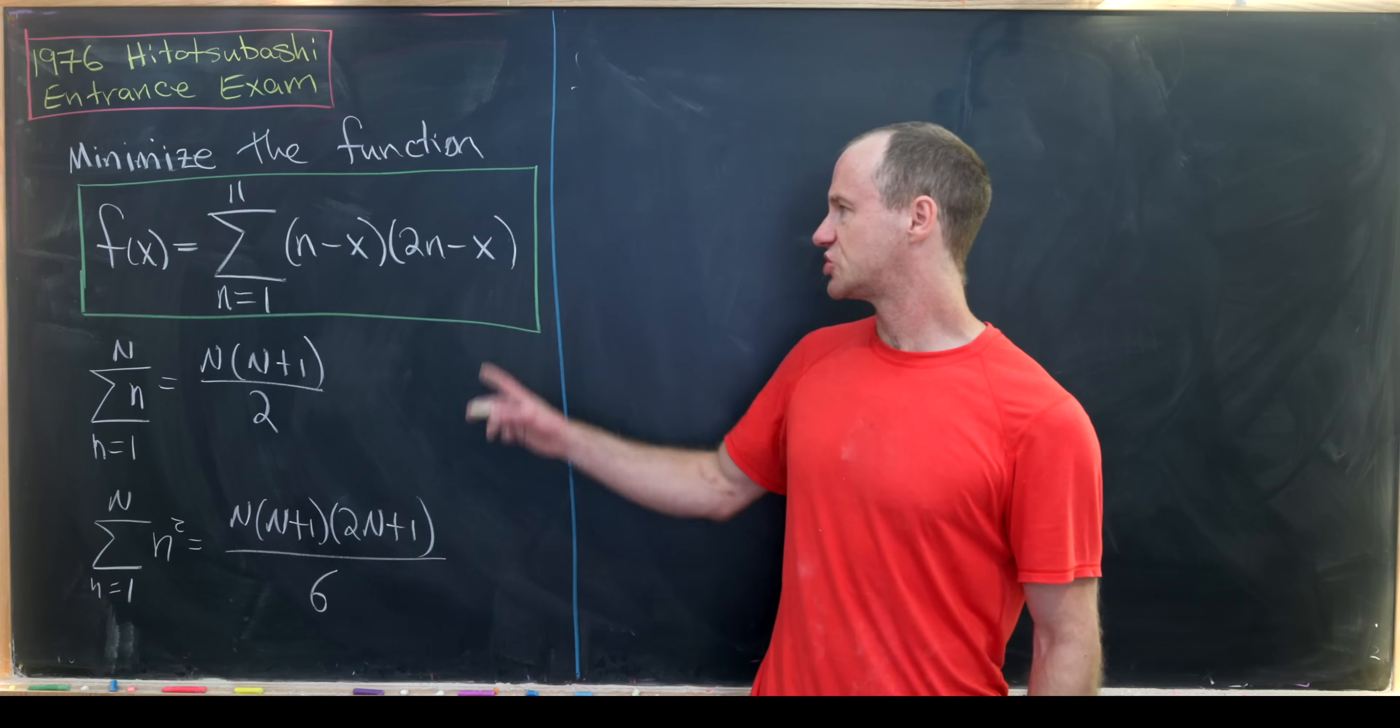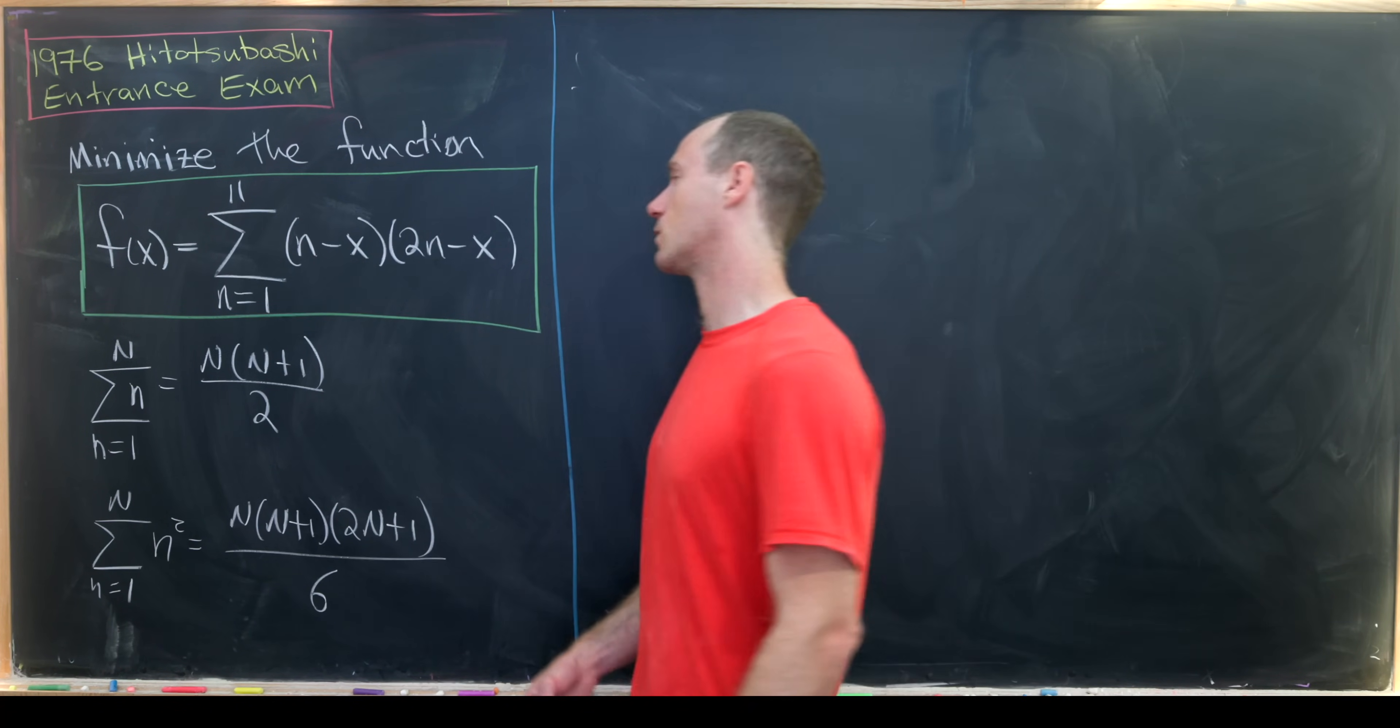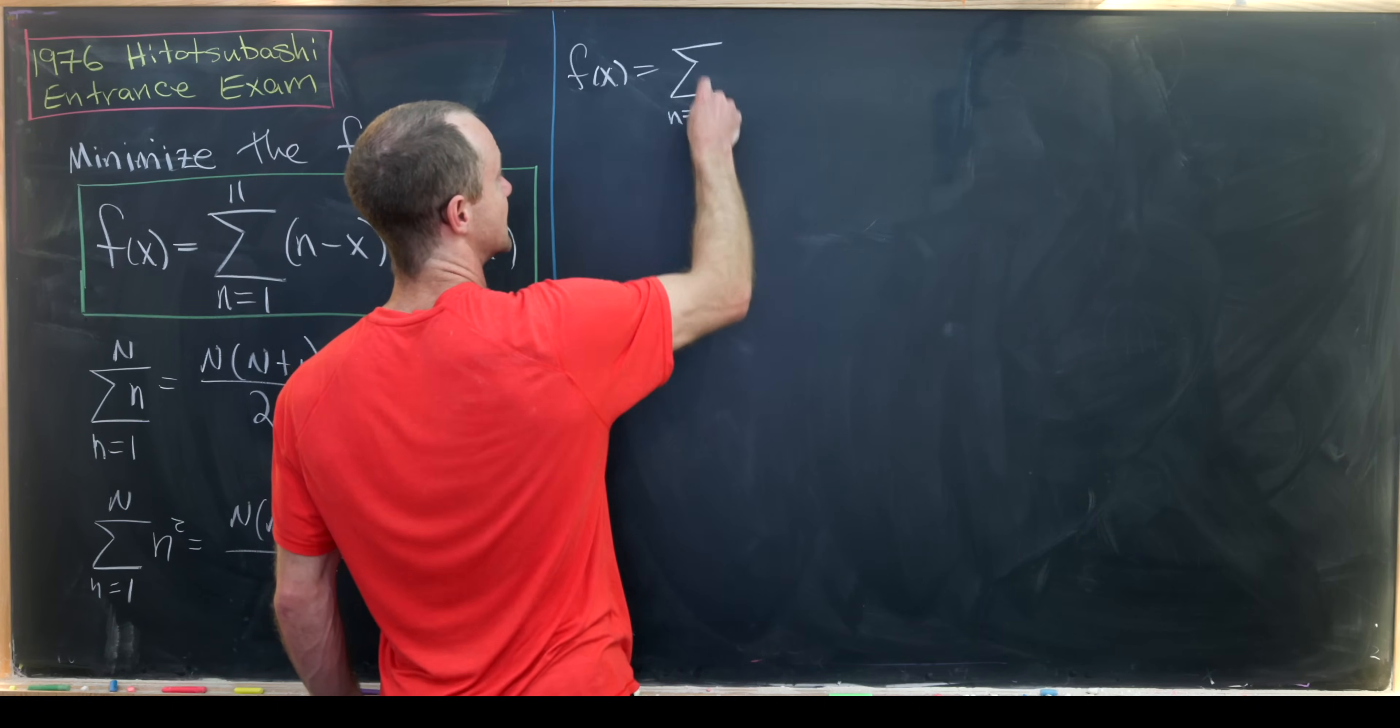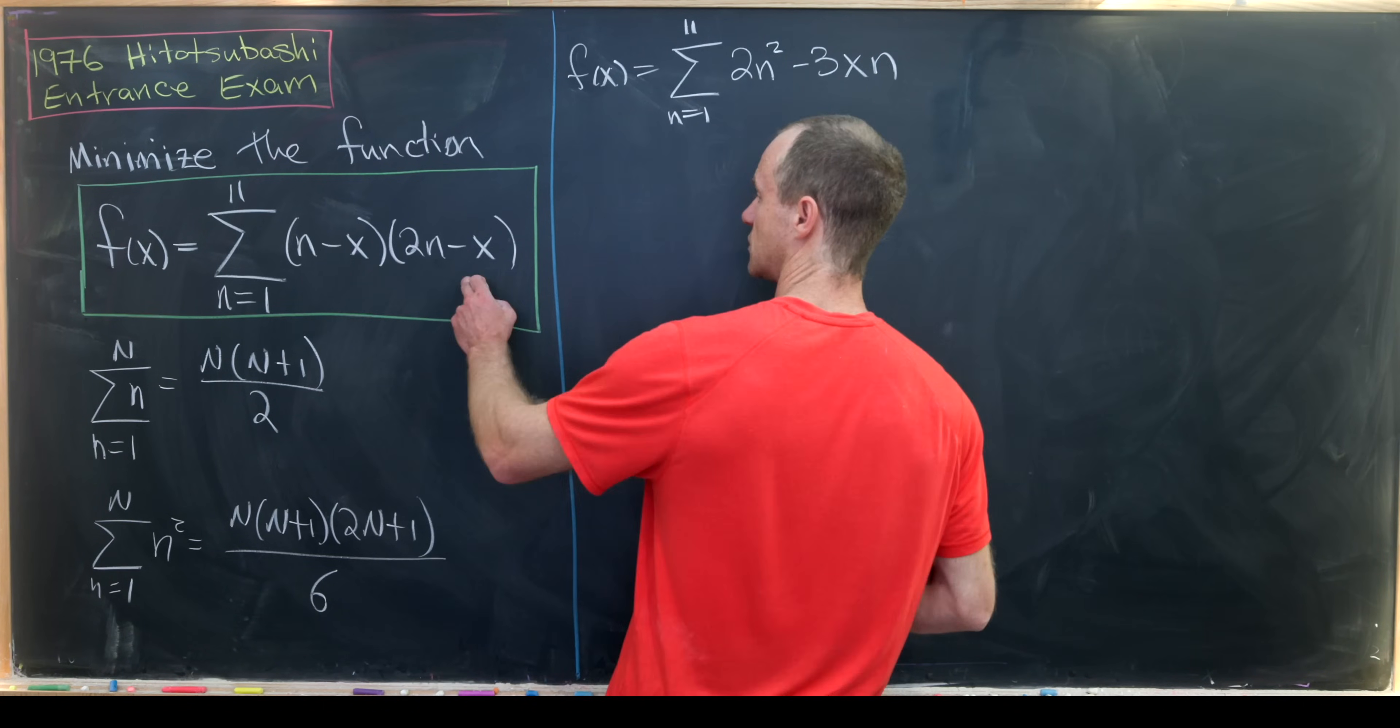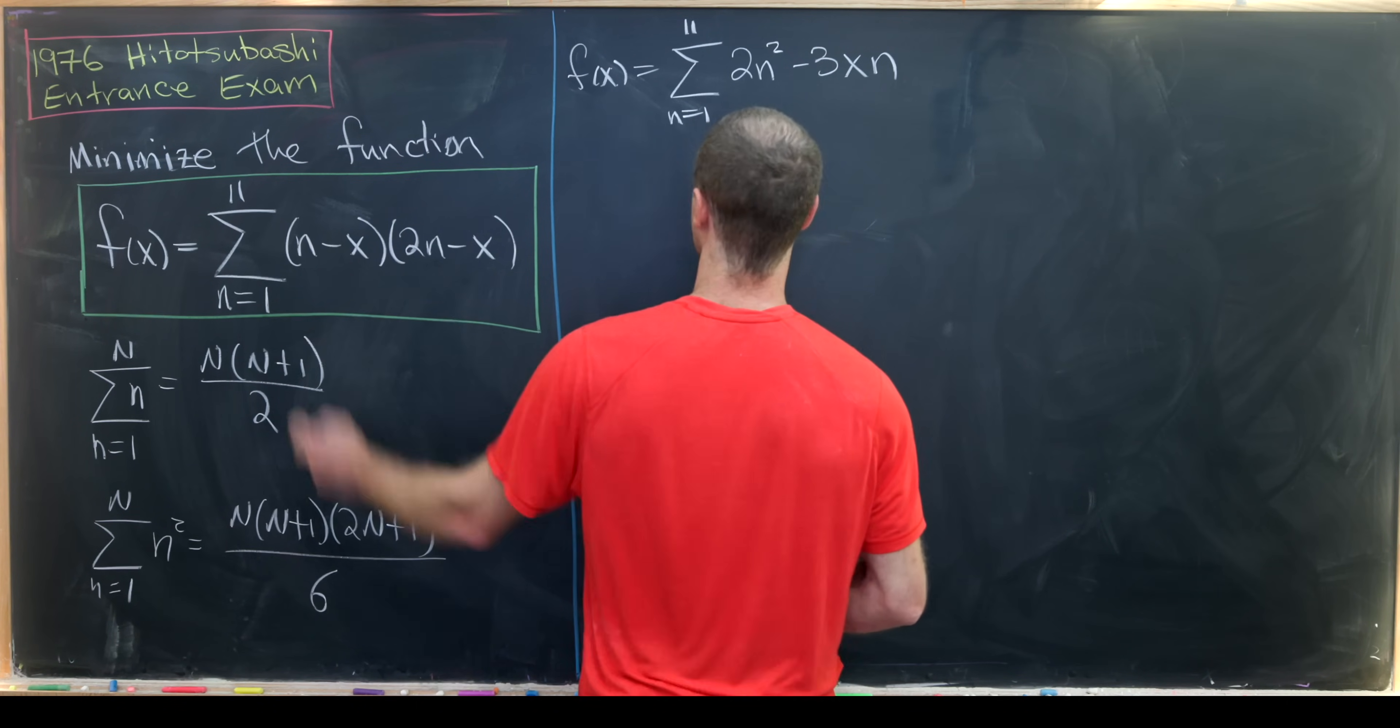Okay, so let's start by multiplying out what's happening within this summation so that we can apply these formulas. So f(x) equals the sum as n goes from 1 to 11 of 2n² - 3xn.